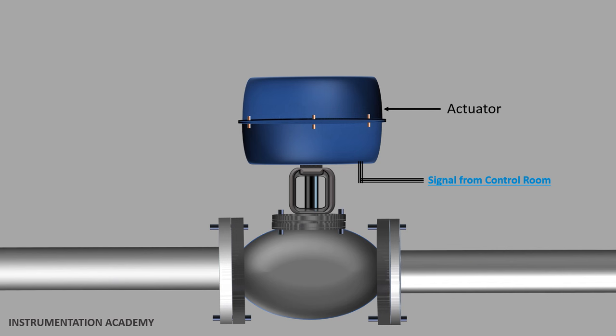This type of valves which uses actuators to automatically control the flow is called a control valve. Any valve can be converted to a control valve simply by adding an actuator.